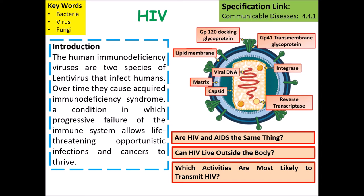HIV is the human immunodeficiency virus. Over time it can cause acquired immunodeficiency syndrome (AIDS), which is a condition that causes progressive failure of the immune system and allows life-threatening opportunistic chronic infections such as cancers to take hold.